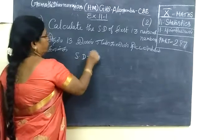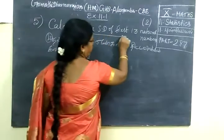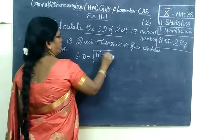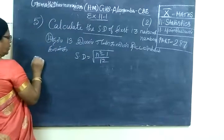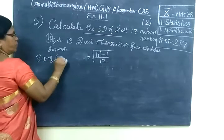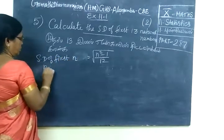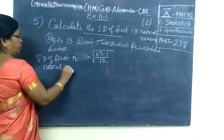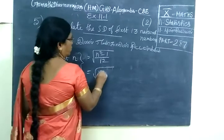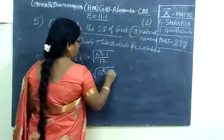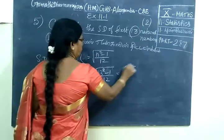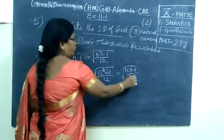The formula for standard deviation of first n natural numbers equals root of n square minus 1 by 12. So standard deviation of first n natural numbers equals root of 13 square minus 1 by 12.